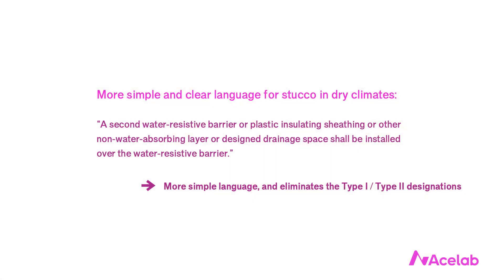Our stucco problems are not related to insufficient water holdout — they're due to insufficient drainage and insufficient drying. But so far we're just talking about dry climates, where we don't really have a problem. While the code language is needlessly complicated, it's pretty easy to comply with by just installing two layers of WRB — the second layer isn't that expensive or difficult to install. For the sake of clarity and simplicity, all of this complicated code language for dry climates could be replaced with a single sentence requiring a second water resistive barrier, plastic insulating sheathing, or other non-water-absorbing layer or design drainage space installed over the WRB.